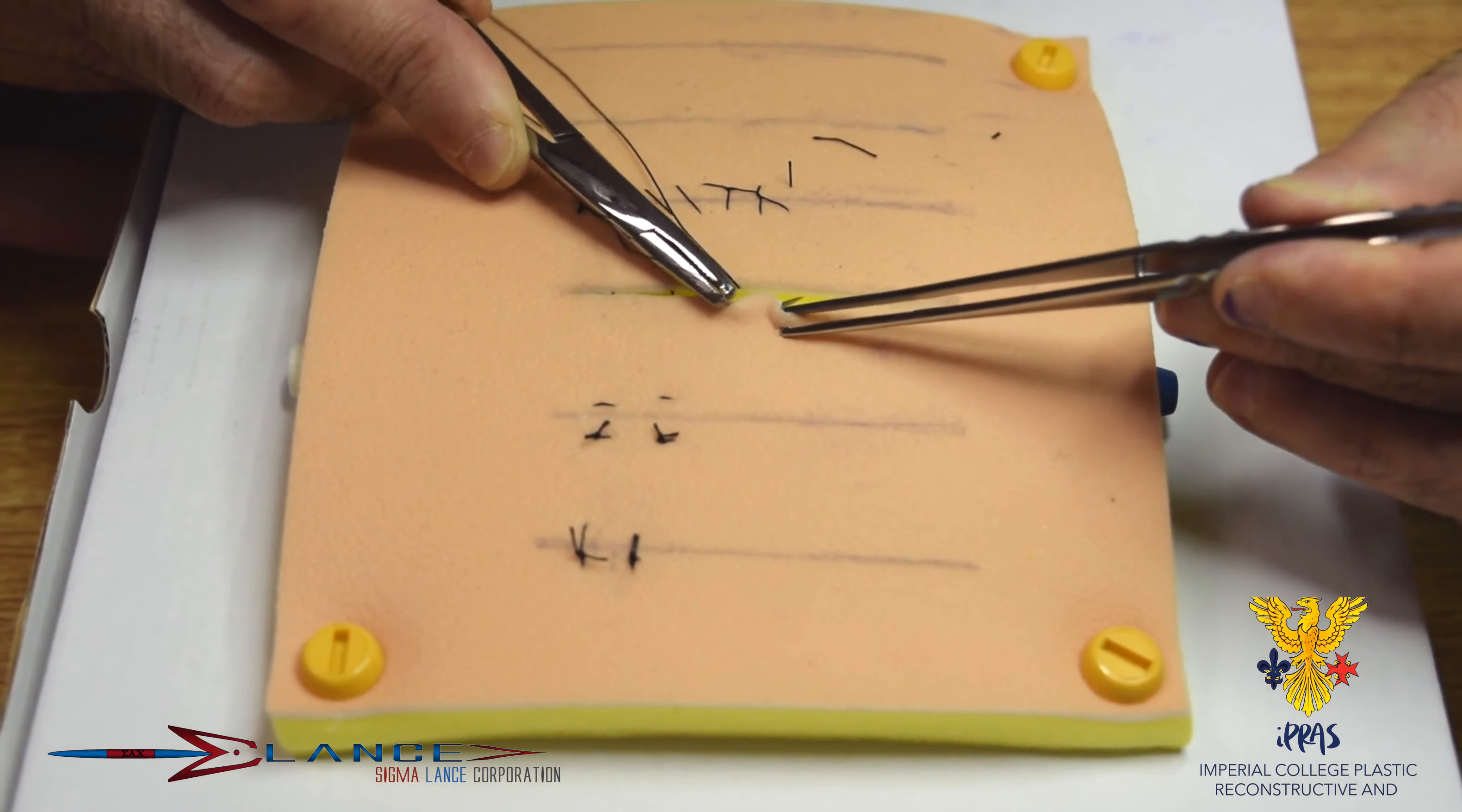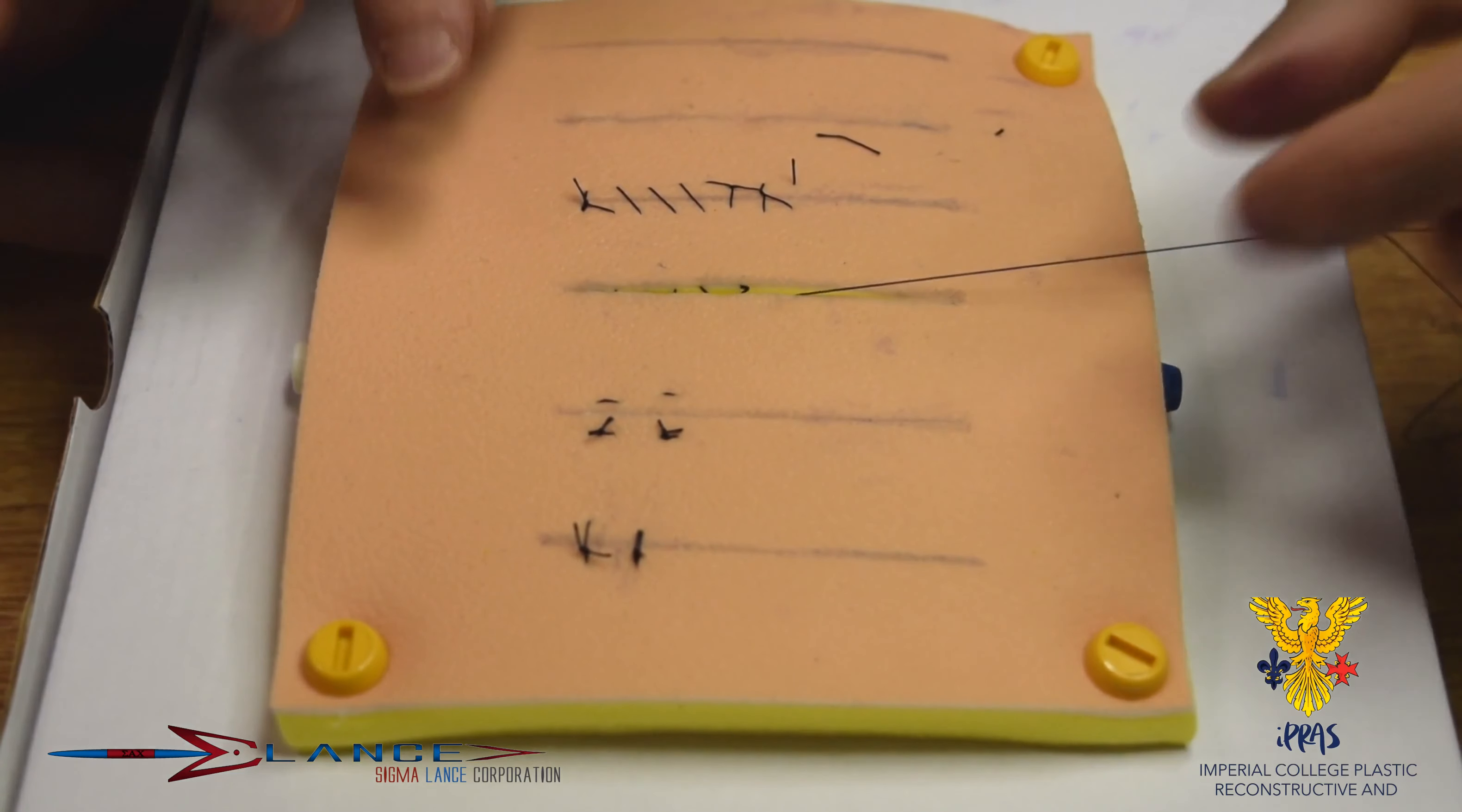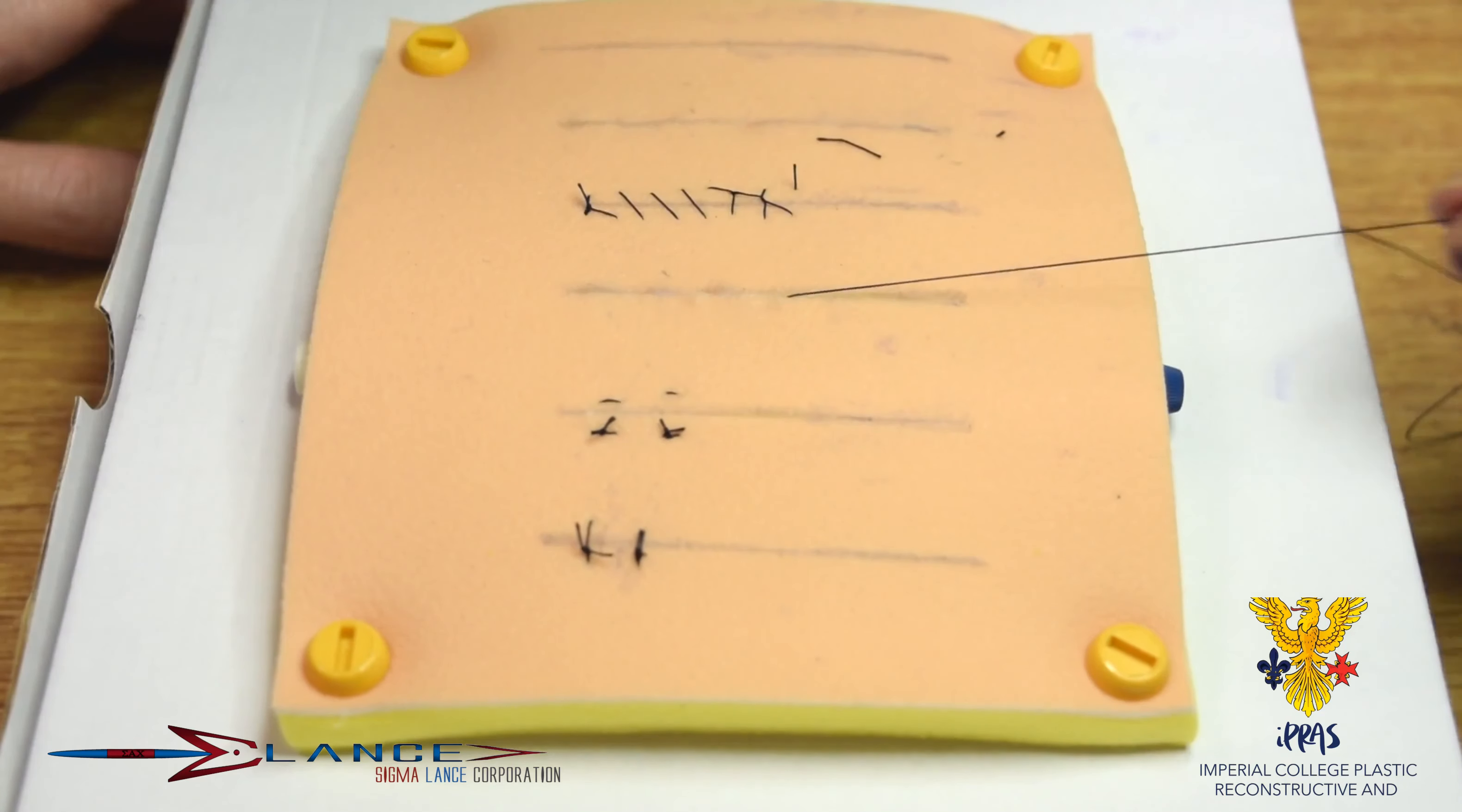And it shouldn't be square, it should be slightly zigzag, exactly like I'm showing, because the next stitch is slightly behind the other. And here it is, and I'm going to pull it through. And that closes away.